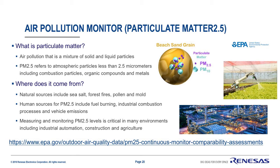Human sources, however, can be regulated, and understanding where PM comes from is very important. PM10 is most commonly associated with road dust and construction activities. Wear and tear on brakes and tires on vehicles and crushing activities at construction sites can all contribute to a rise in PM10. Alternatively, PM2.5 is more associated with fuel burning, industrial combustion processes, and vehicle emissions.